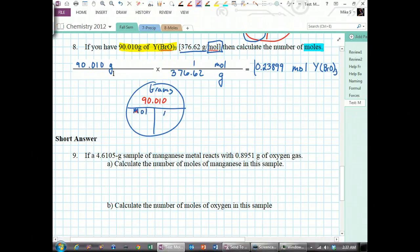And you have the molecular weight, the molecular weight is given at 376.62. Since the 90.01 is on top and 376.62 is on the bottom, you just divide.